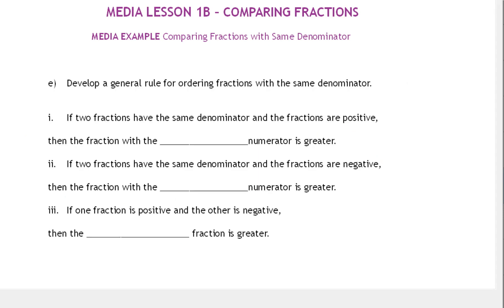If two fractions have the same denominator and the fractions are positive, then the fraction with the larger numerator is greater. For example, comparing 3/6 and 5/6 — well, 5/6 is greater, so the one with the larger numerator is greater.